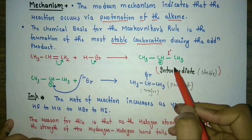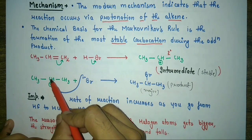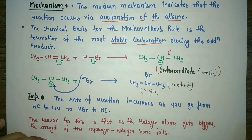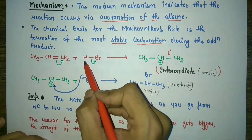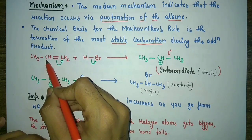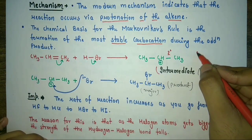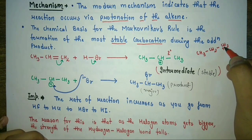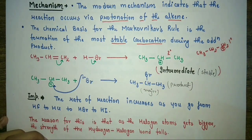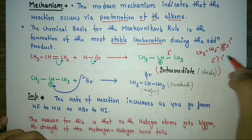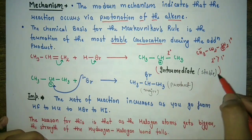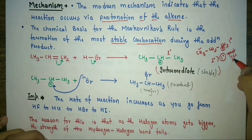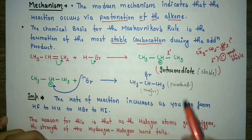After the formation of this intermediate, the bromide ion (halide ion) comes in contact with this carbocation and forms our major product. A minor product is also formed but at lower concentration. In the minor product pathway, H migrates to the other carbon, forming a primary carbocation (CH3CH2CH2+), which is less stable than the secondary carbocation. Since the secondary carbocation is more stable than the primary, the major product follows Markovnikov's rule.